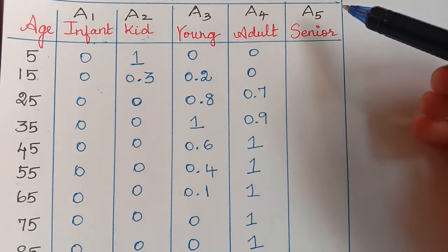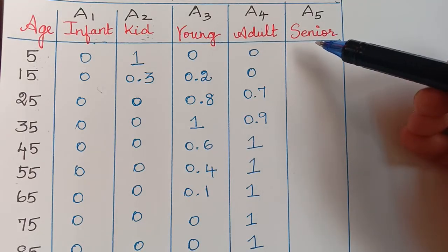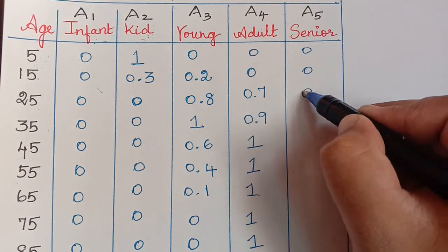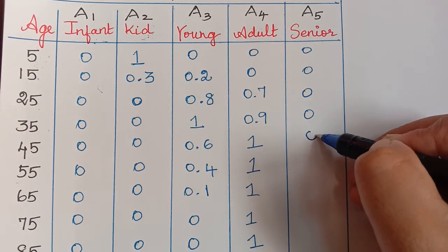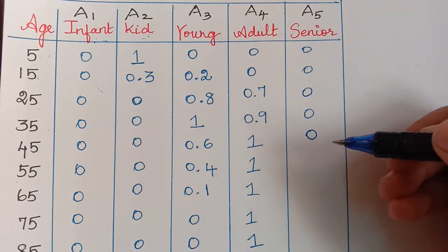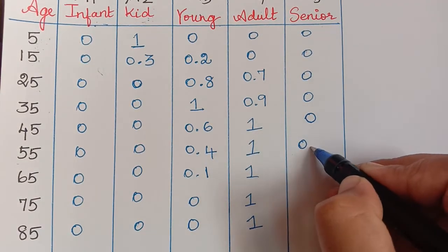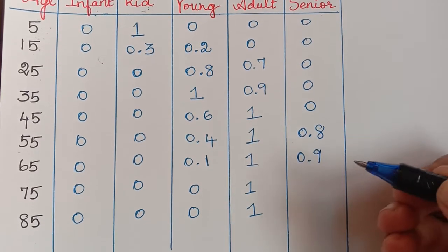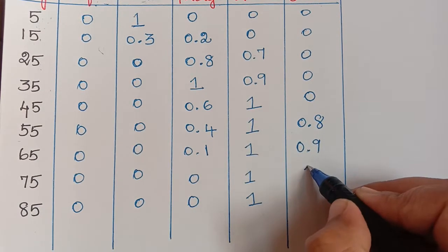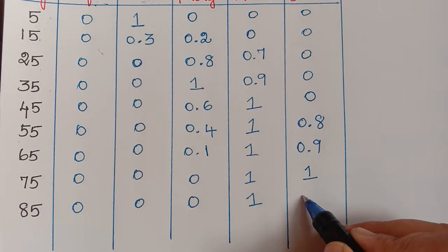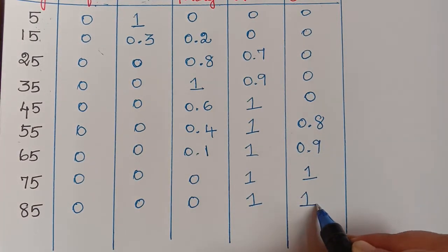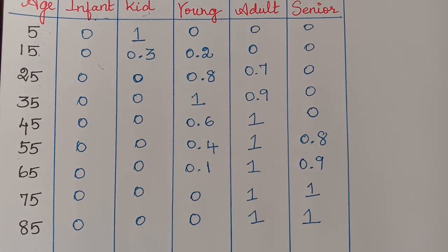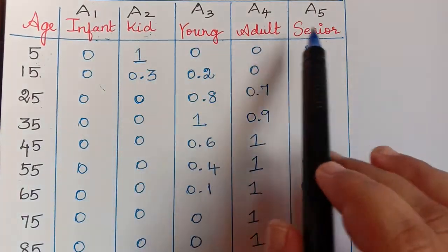For fuzzy set A5 (senior citizen): ages 5 through 45 get 0. Age 55 gets 0.8 as almost becoming senior, age 65 gets a value close to senior, and ages 75 and 85 both get 1 as full senior citizens. This is how membership degrees are assigned according to the criteria of each fuzzy set.